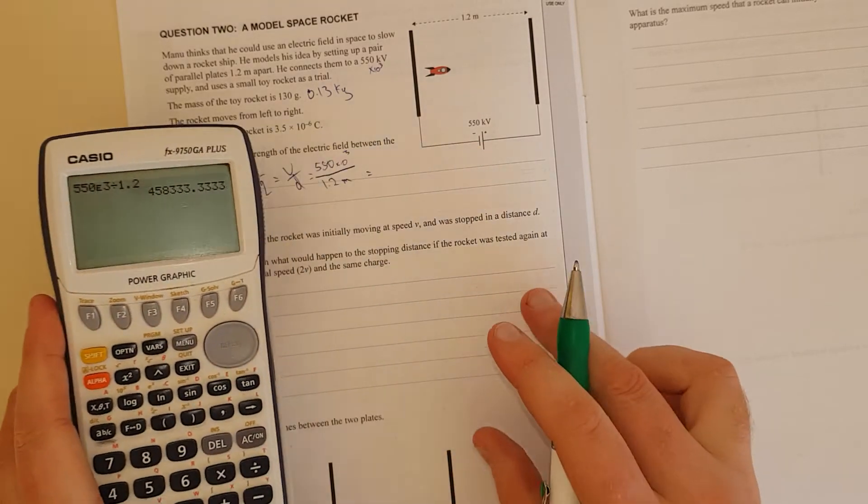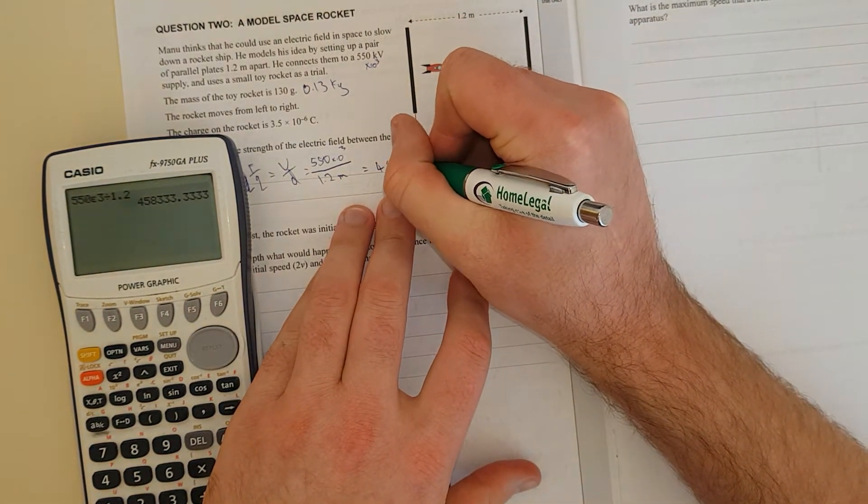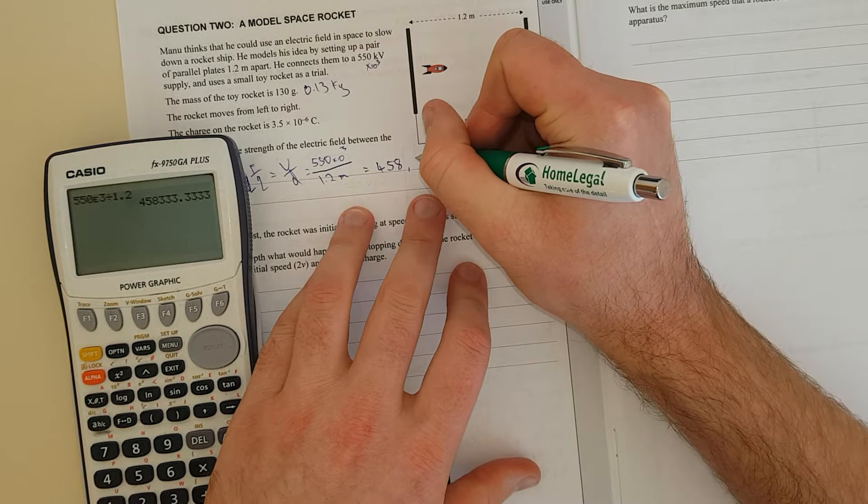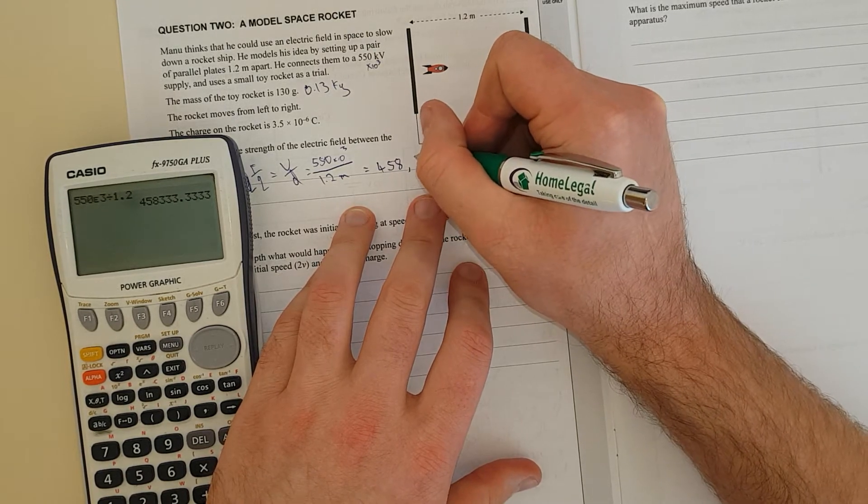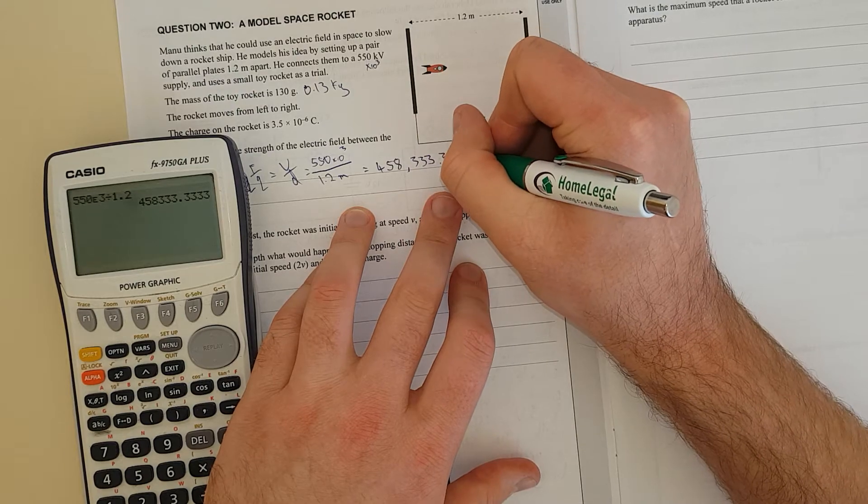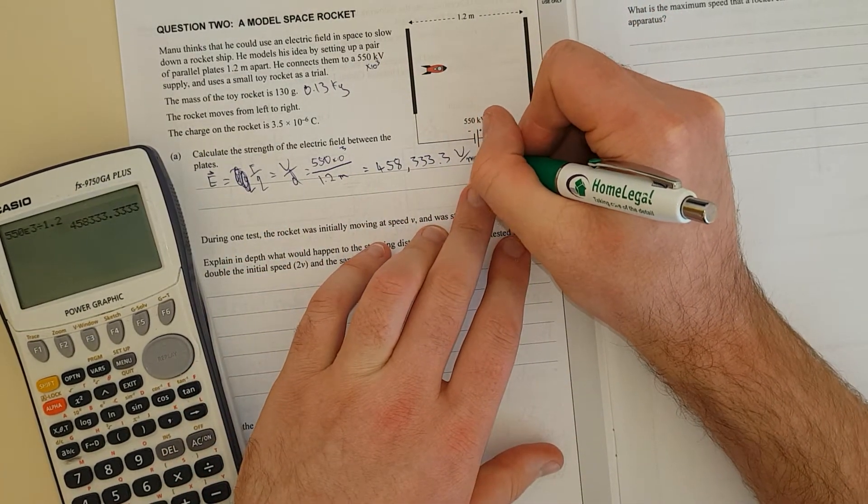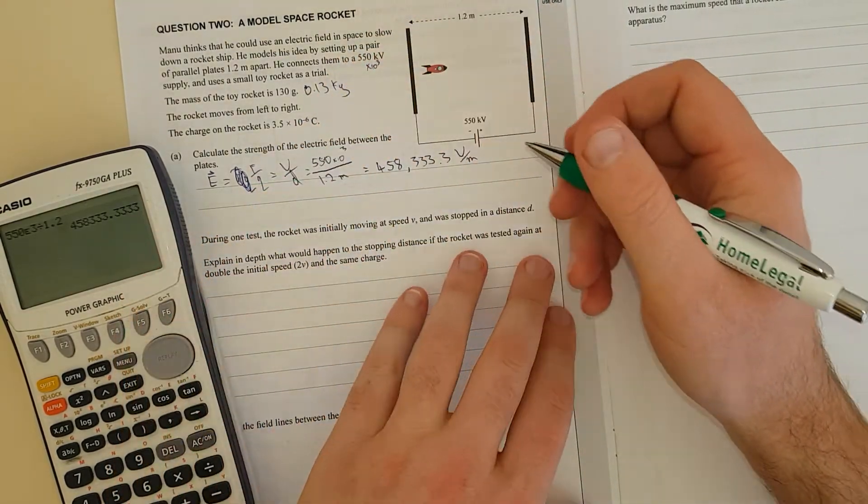And that equals 458,333. So what I'm going to write, how am I going to write this? I'll write it down: 4, 5, 8, comma, because we're not German, 3, 3, 3. What's the units? Field strength. So it's volts per meter, or you could have newtons per coulomb. It has two units.